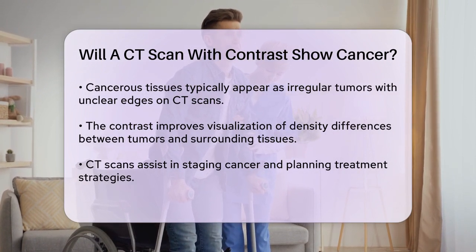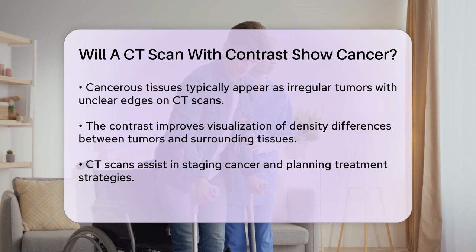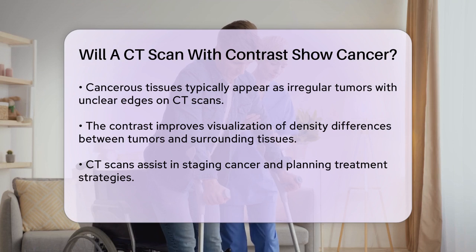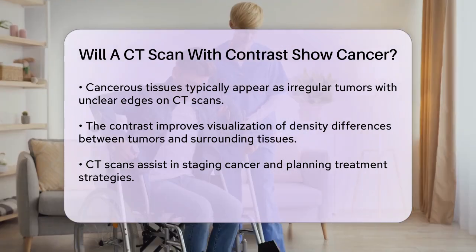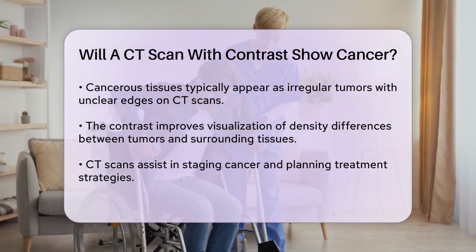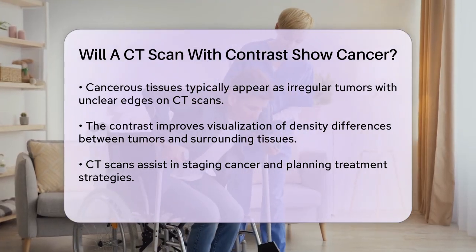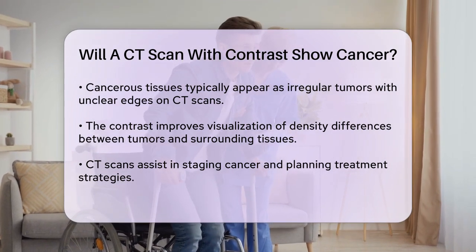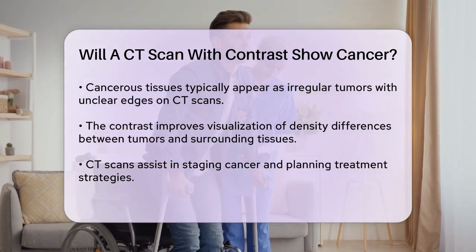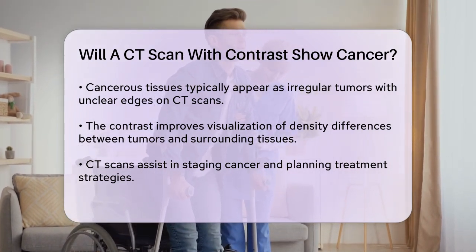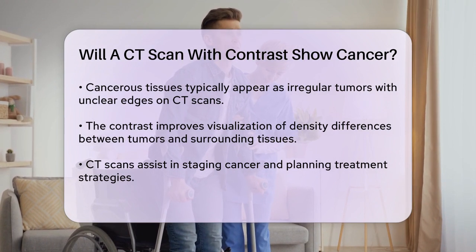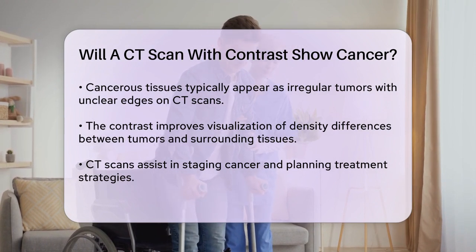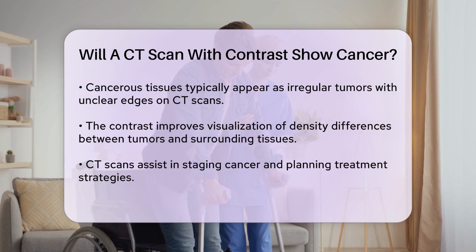CT scans with contrast are not only useful for diagnosing cancer, but also for staging the disease and planning treatment. They can show whether the cancer has spread to other parts of the body and help doctors determine if the cancer can be removed with surgery. Additionally, these scans are used to assess the response to therapy and monitor the progression of the disease.